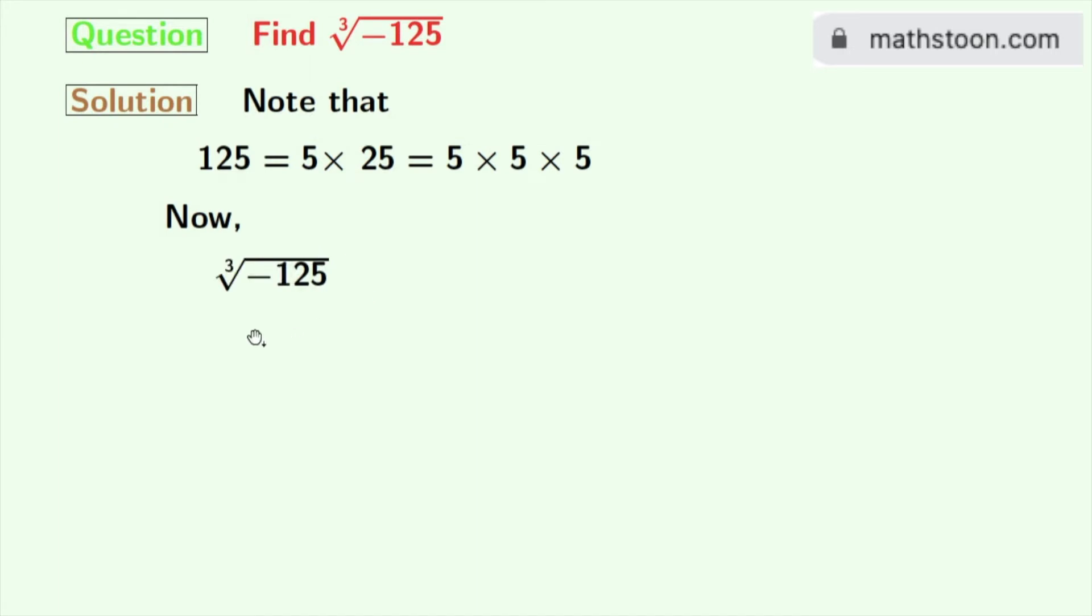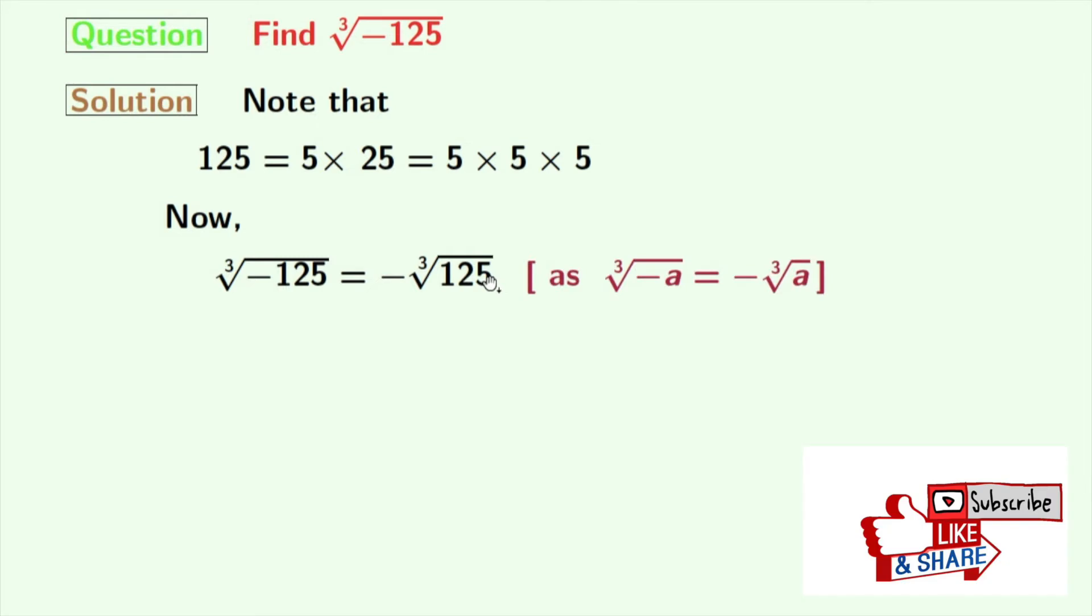Now we have to find cube root of minus 125. We can rewrite this as minus cube root of 125, as we know that cube root of minus a is equal to minus cube root of a. Here a is 125.